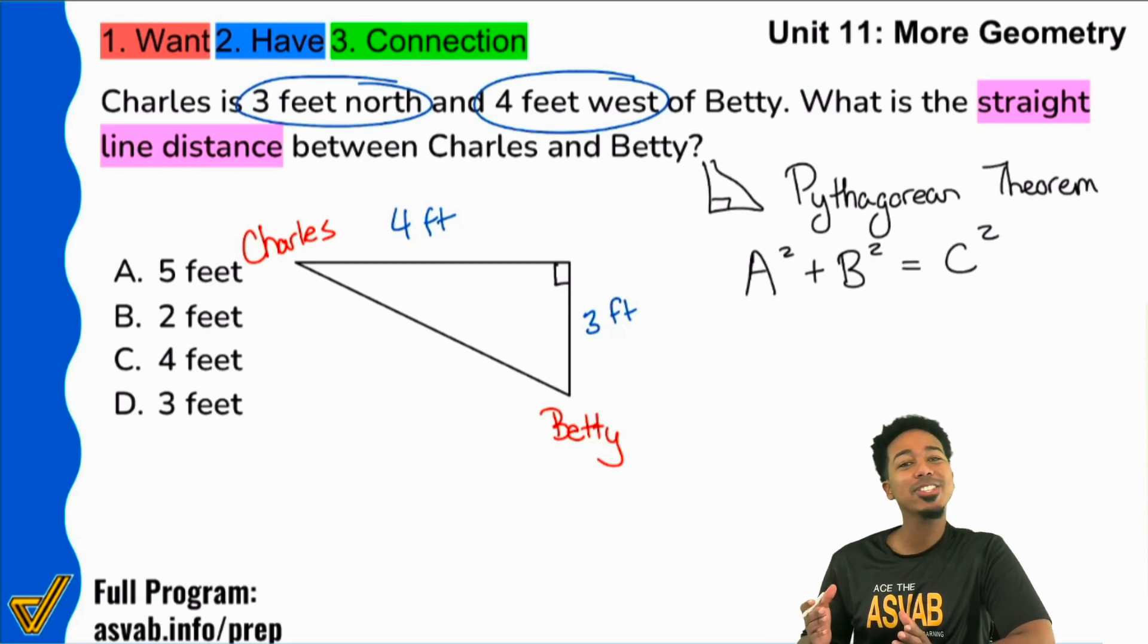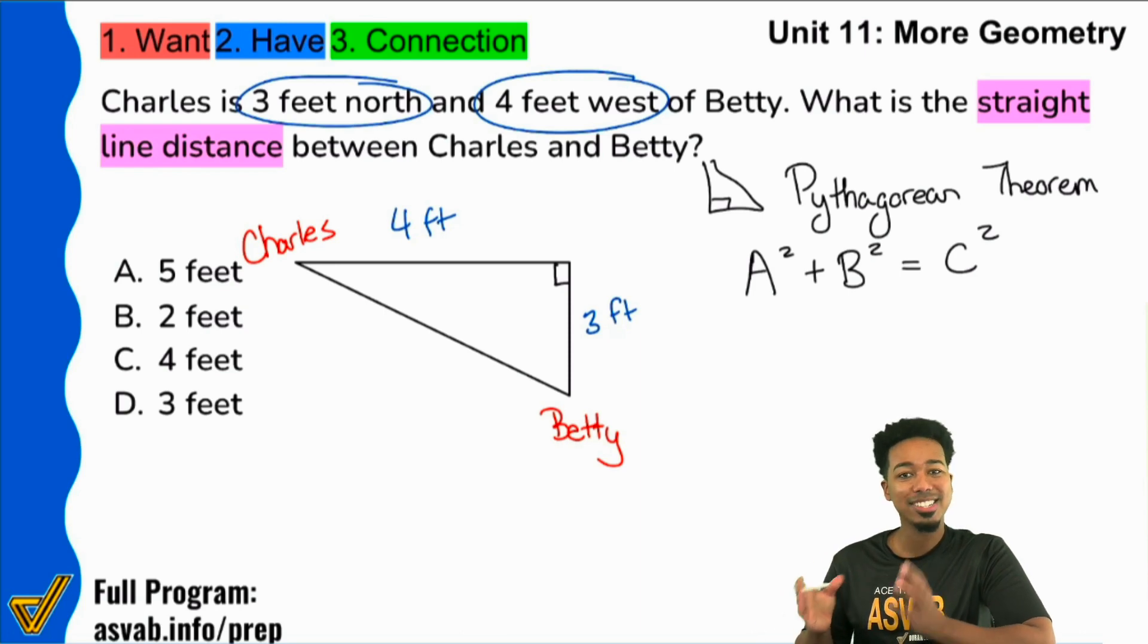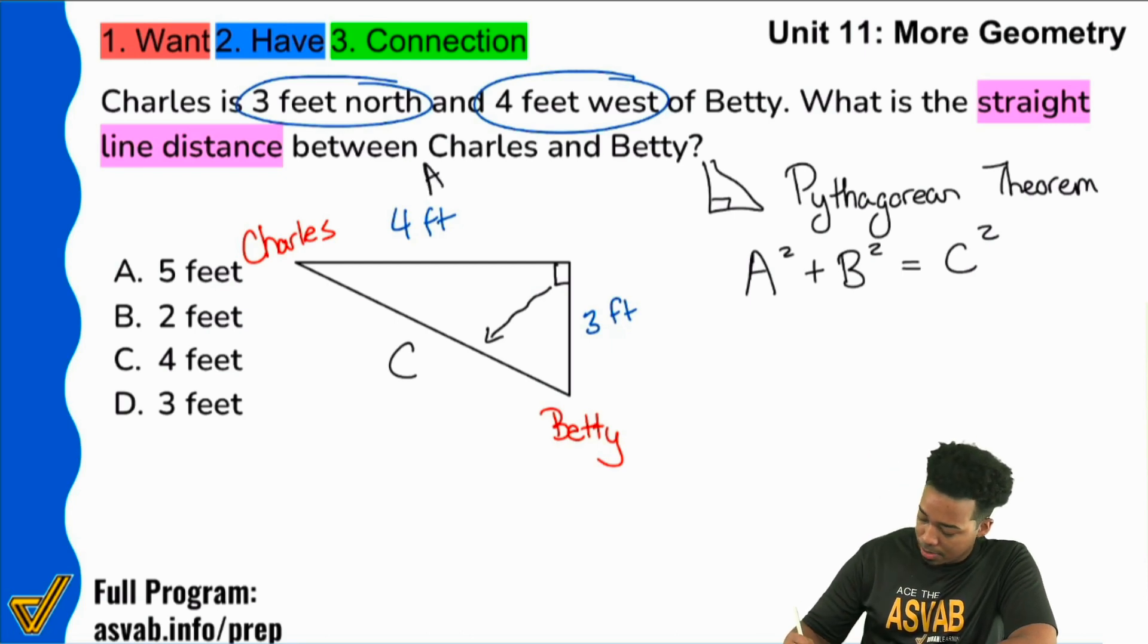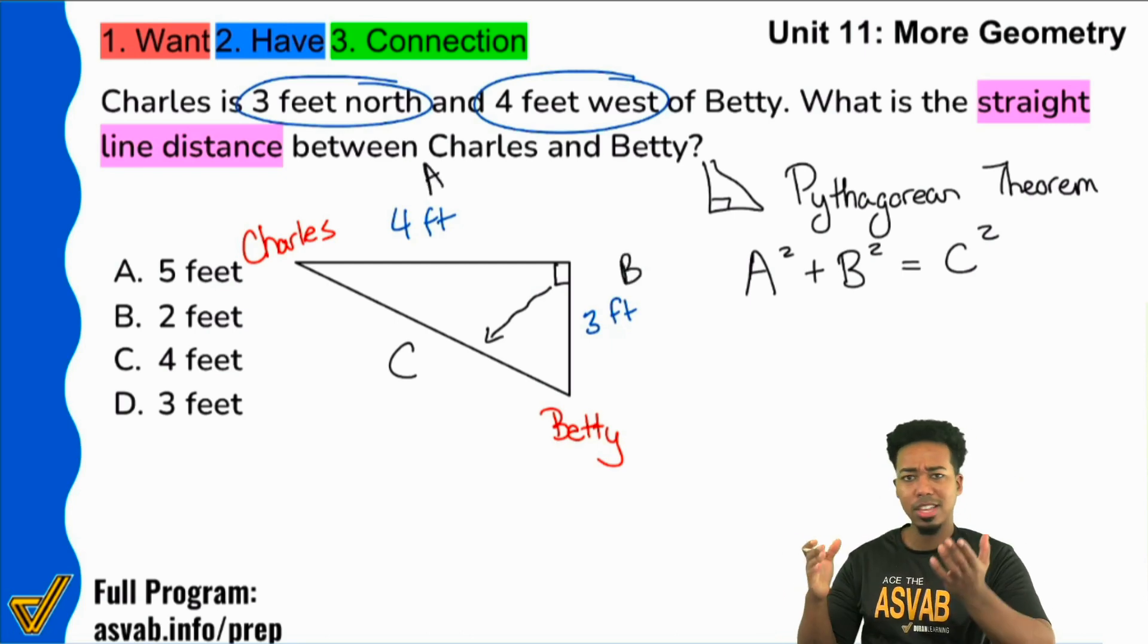So remember that the only thing you need to know is that C, the one that's by itself, is the hypotenuse, the longest side, the one across from that right angle. So this is C, or the hypotenuse. So you can say that four feet is A, the three feet is B. You can say that the four feet is B, the three feet is A, it doesn't matter. It's just the C that is always going to be the hypotenuse.